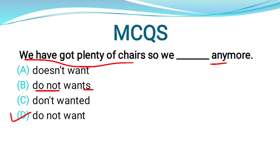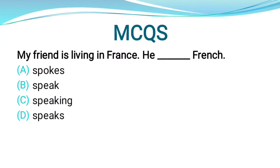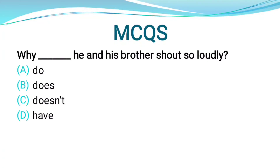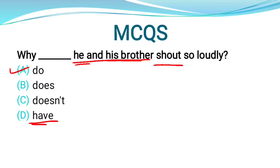Use 'do' and 'does' with the base verb; never add 's' to the main verb in negative sentences. Example: 'My friend is living in France, he speaks French.' Next MCQ: 'Why ___ he and his brother shout loudly?' The subject 'he and his brother' is plural, so use 'do' — 'Why do he and his brother shout?' The verb remains in base form 'shout', not 'shouted'.